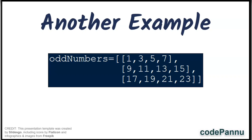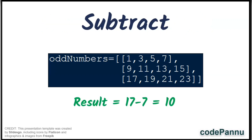Let us see one more example. In the above nested list called 'odd numbers', can you see item 17 in the third row? From that 17, we are going to subtract the item 7 from the first row. The value of 17 minus 7 will be 10. Now let's see how to get this output.